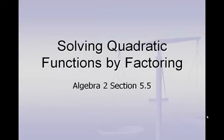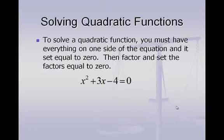In this lesson we are going to be looking at solving quadratic functions by factoring. This is section 5.5 in the Algebra 2 book. When you solve a quadratic function, we first have to have everything on one side of the equation and have it set equal to zero. Then we're going to factor this using the methods that we learned already about factoring and set the factors equal to zero so that we can actually solve for x.